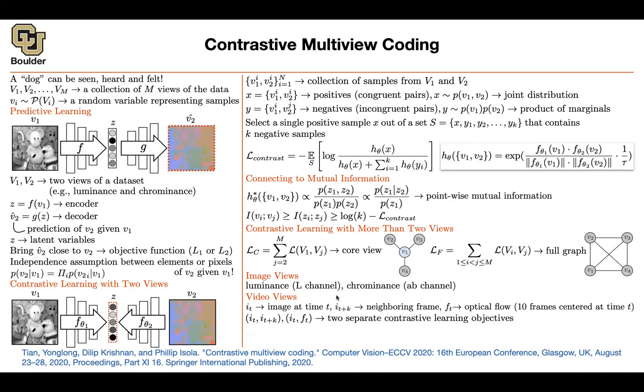You can have multiple image views, perhaps luminance, chrominance, we covered them. Depth could be another view. Surface normals could be another view. And semantic labels could be another view of the same scene.